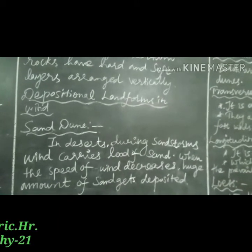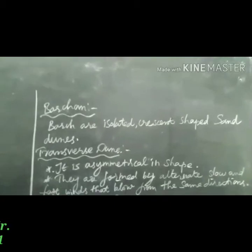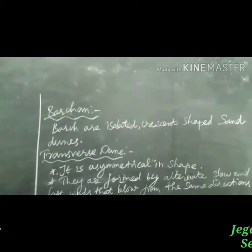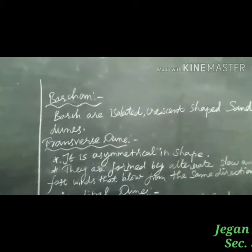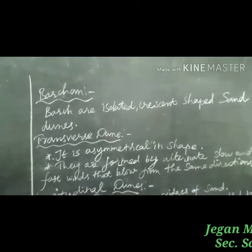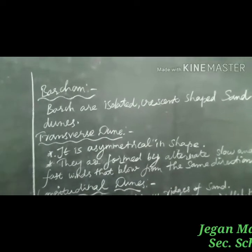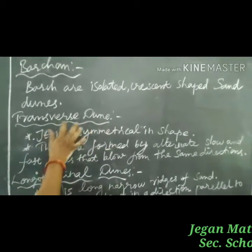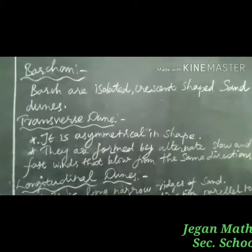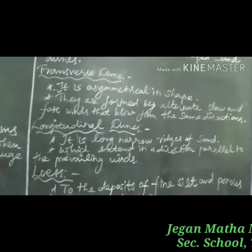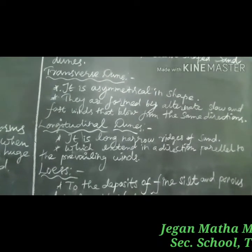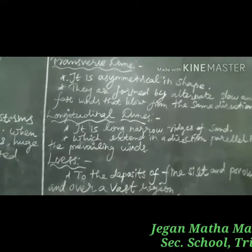There are different types of dunes. Wind isolates the crescent shape to the sand; it is called barchan or crescent-shaped sand dunes. They have a gentle slope on the windward side and steep slopes on the leeward side. Next is transverse dunes. Transverse dunes are sinuous in shape. They are formed by alternate slow and fast winds that blow from the same direction.